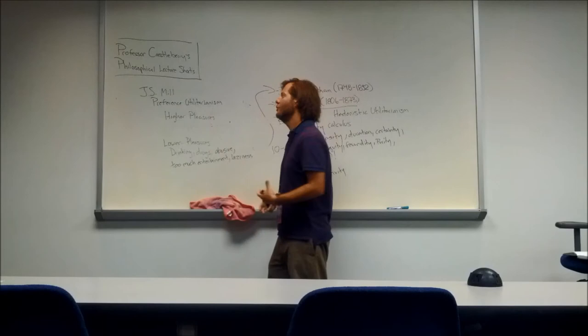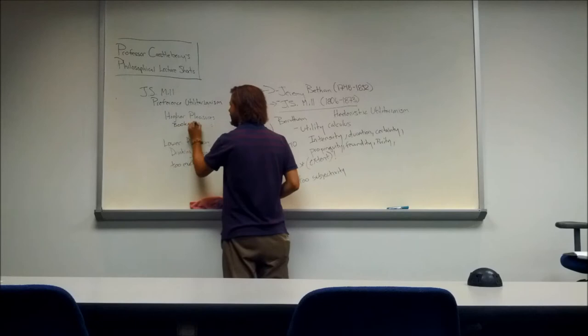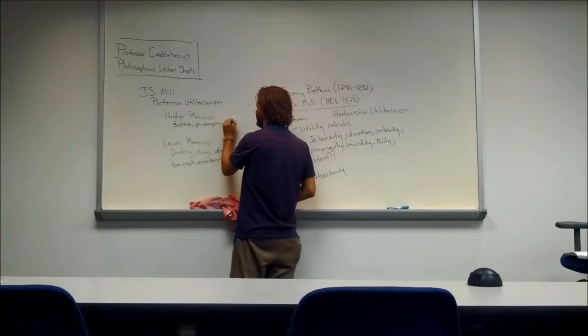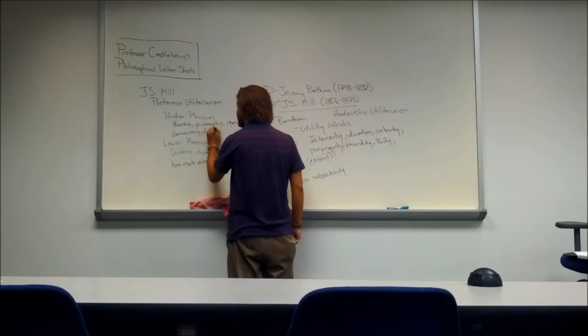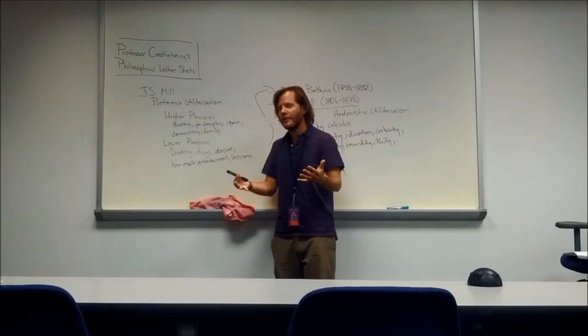Now, what are the higher pleasures, according to J.S. Mill? He says things like reading books. Philosophy, of course. Maybe going to the opera or something like this. But also you see things such as democracy, and we have things like family. Those things are also included in there under higher pleasures. Things that usually bring about the highest amount of good.